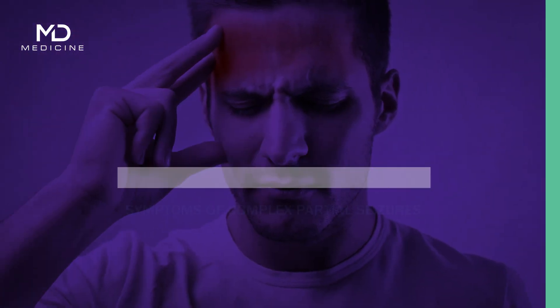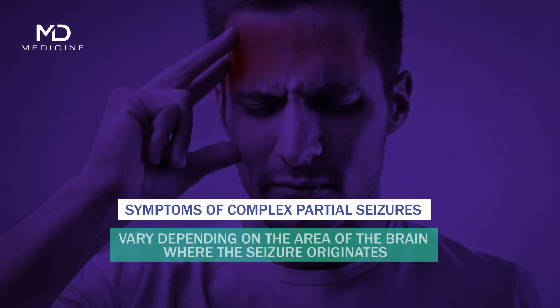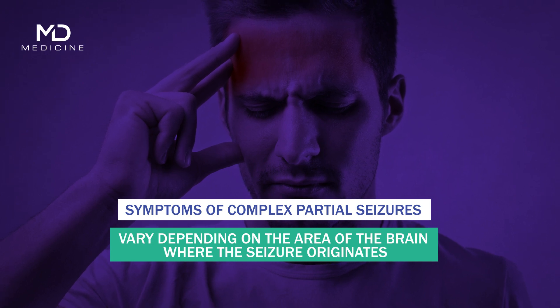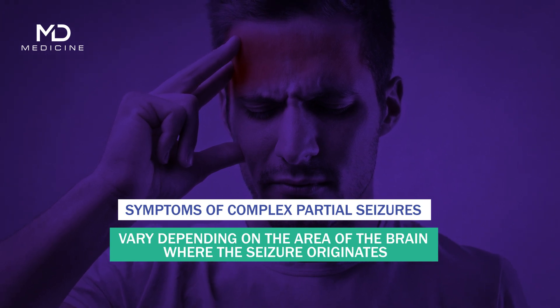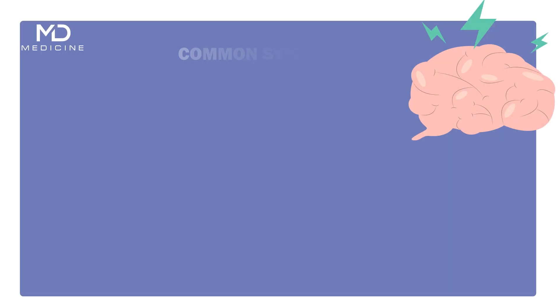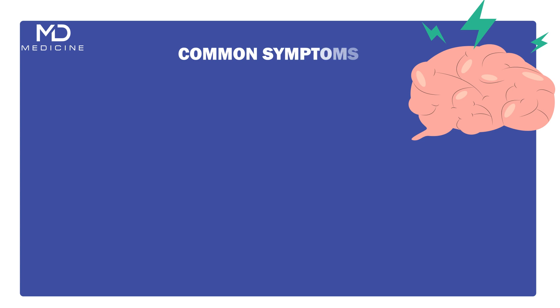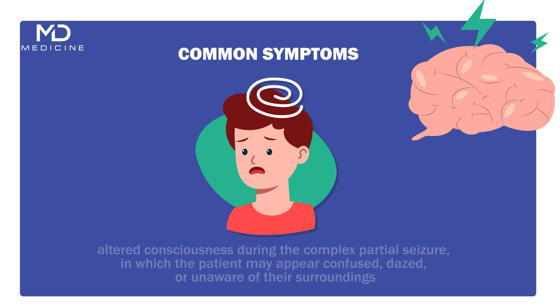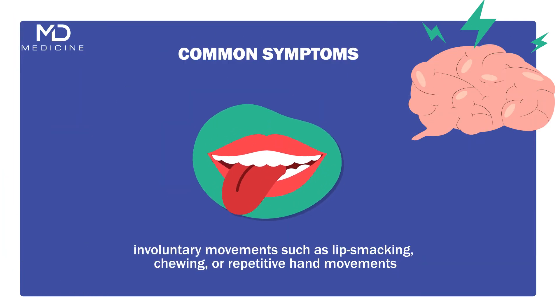The symptoms of complex partial seizures can vary depending on the area of the brain where the seizure originates. Common symptoms include altered consciousness, in which the patient may appear confused, dazed, or unaware of their surroundings, as well as involuntary movements such as lip smacking, chewing, or repetitive hand movements.